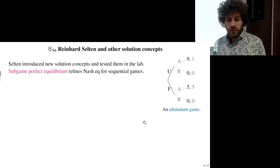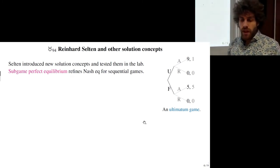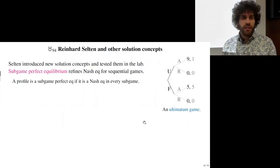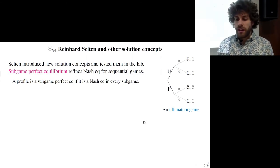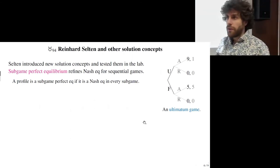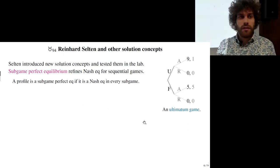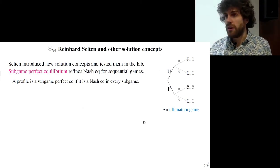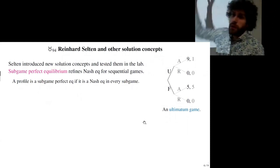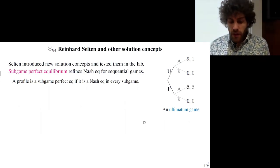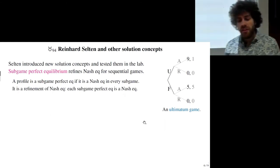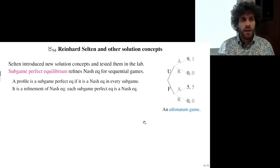This notion is called the subgame perfect equilibrium, which refines Nash equilibrium for sequential games. The definition is: a strategy profile is a subgame perfect equilibrium if it is a Nash equilibrium in every subgame. In the second period subgame, the Nash equilibrium is to accept. And in the first period, given that the other will accept, the Nash equilibrium for the first player is to propose the unfair split.